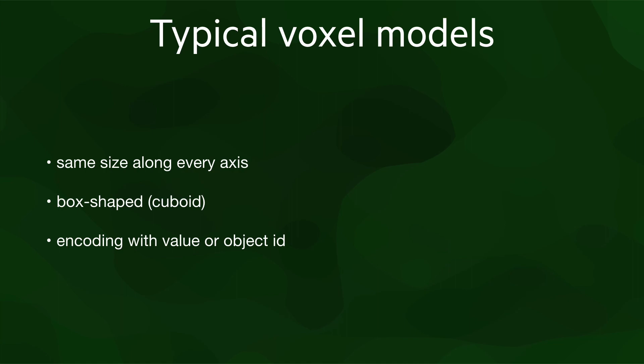Let's summarize the characteristics of the typical voxel models. The voxels are the same size along every axis. The voxels are cuboids — that is, box-shaped. And the voxels are encoded linearly as a list of values or object IDs.